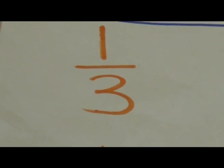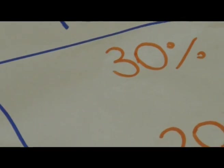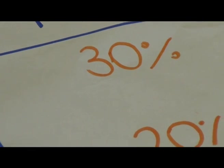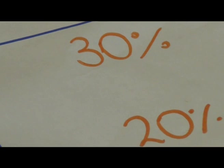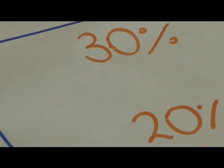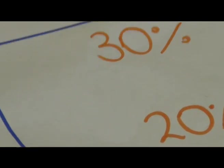One third may seem like it would be 0.3 and 30%, because 30% added together three times doesn't get you to 100 — it gets you to 90. So it would be 33.3 recurring. One fifth is 0.2 and 20%, because 20 times 5 equals 100 and 100 is one whole.